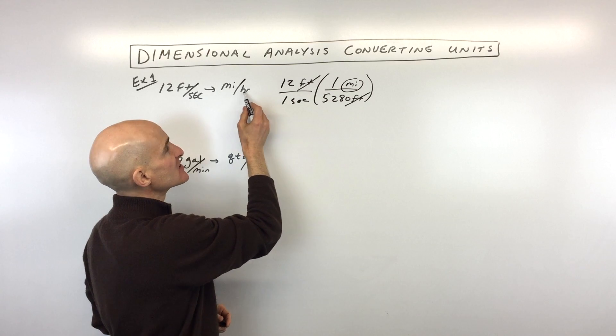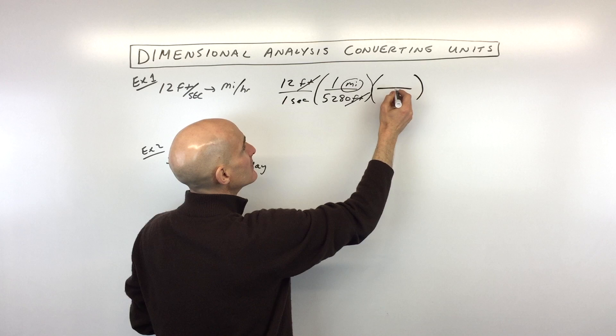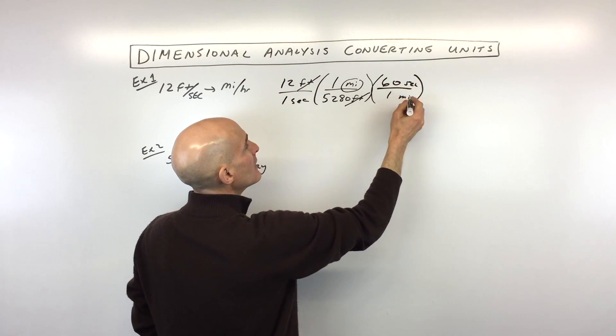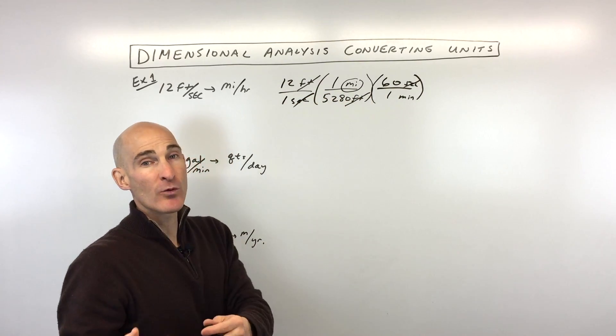Now we just need to convert the seconds to hours. So we know that there's 60 seconds in a minute - 60 seconds for every one minute. And you can see the seconds are canceling numerator and denominator. We're left with minutes, but we want hours.